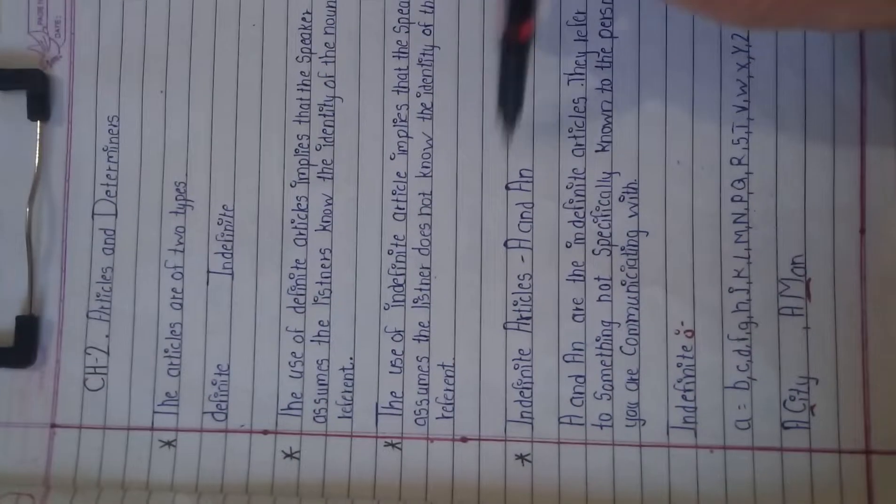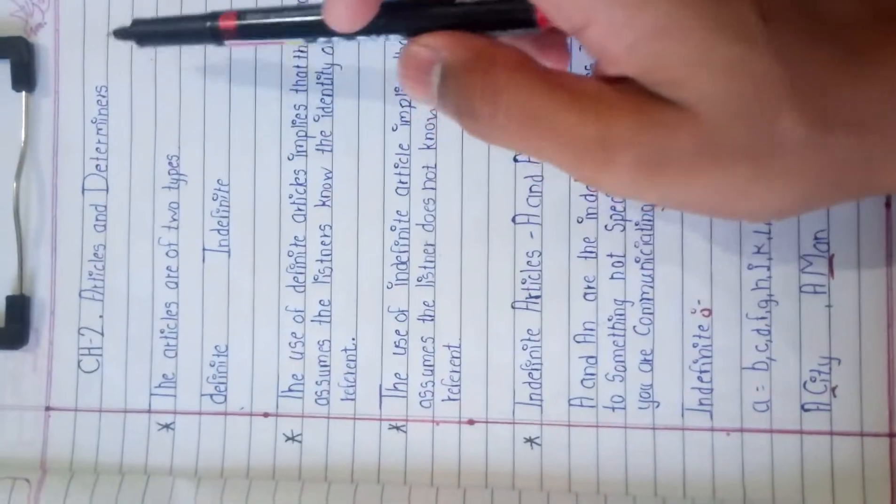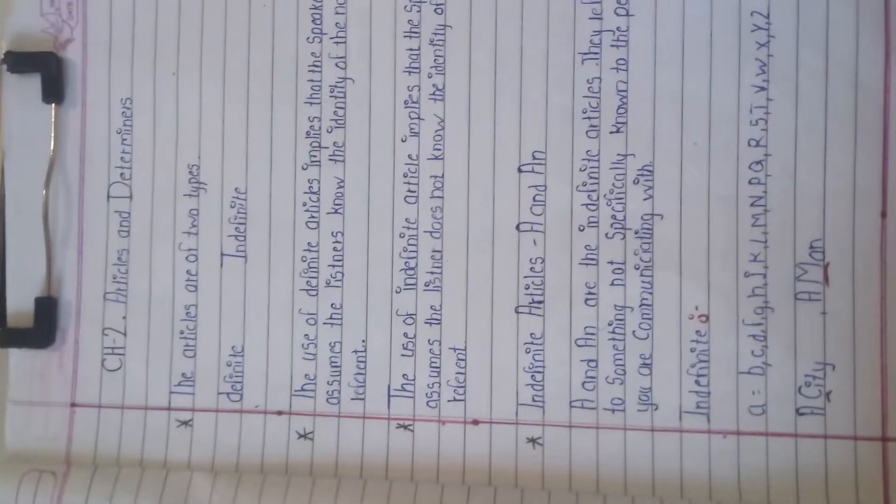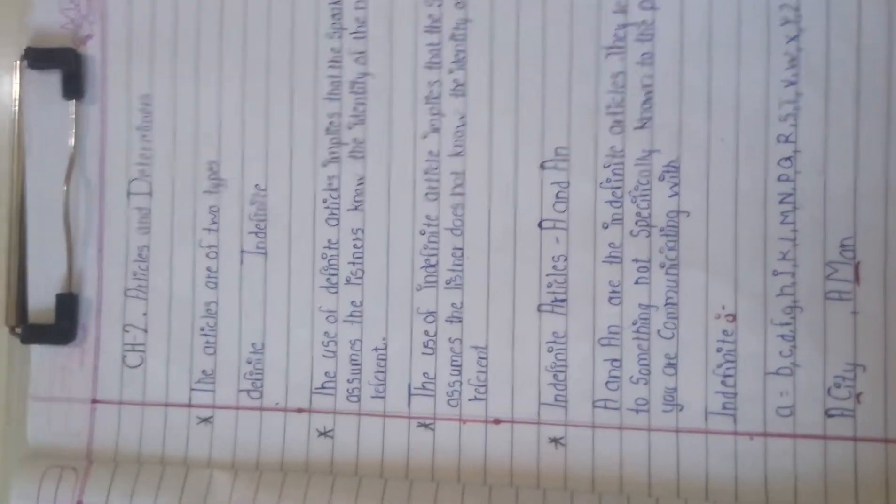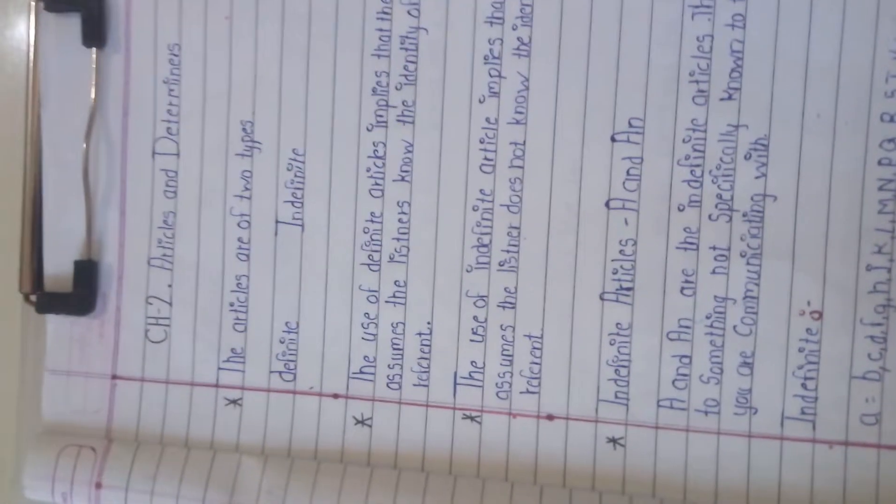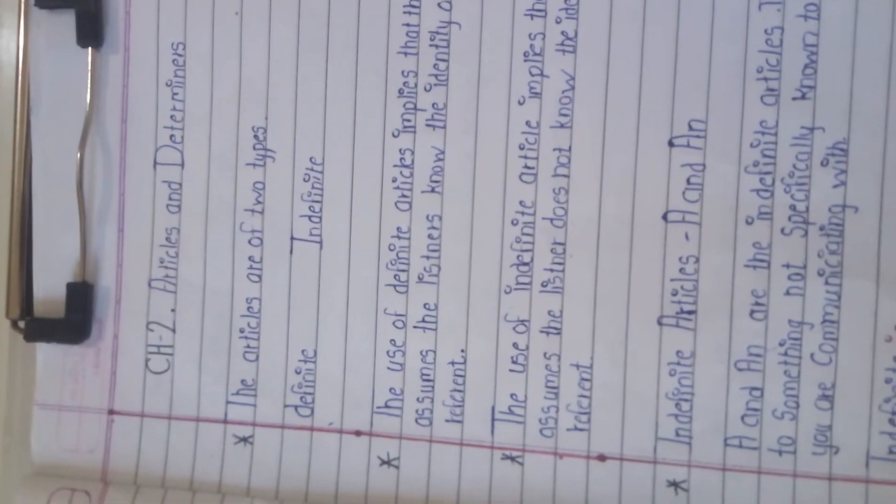Welcome friends, we are going to start our new chapter, chapter number two: Articles and Determiners. Today we are going to learn only articles. In the next lecture, we will learn determiners. Articles in English grammar are words that combine with nouns and indicate the degree of finiteness of reference being made by the noun.